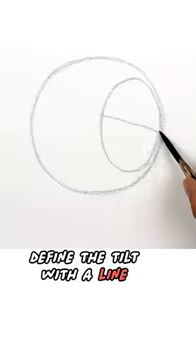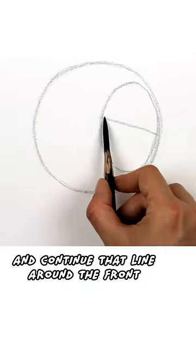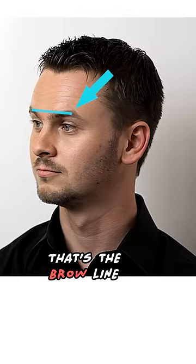Next define the tilt with a line along the side plane and continue that line around the front. That's the brow line.